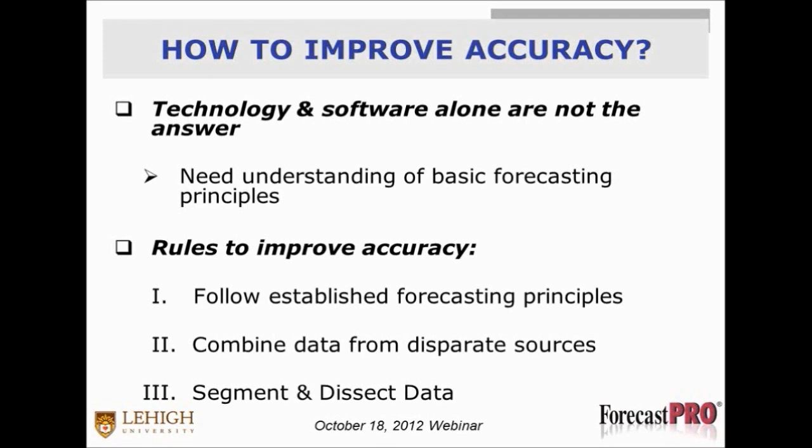I see so many companies that invest hundreds of thousands of dollars in software and then simply surrender completely to the software. To get the best out of the technology and software, you have to have good processes in place. You need to understand the basic principles and know how to do forecasting. So what we're going to look at is the importance of establishing forecasting principles. And we'll talk about how to combine data from disparate sources, and then some ways of segmenting and dissecting data.